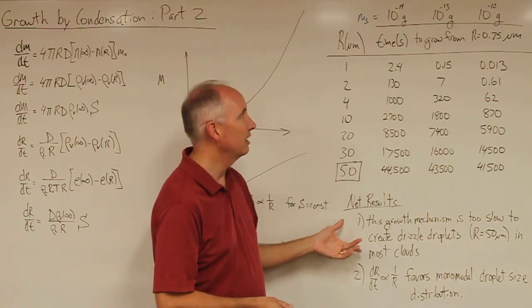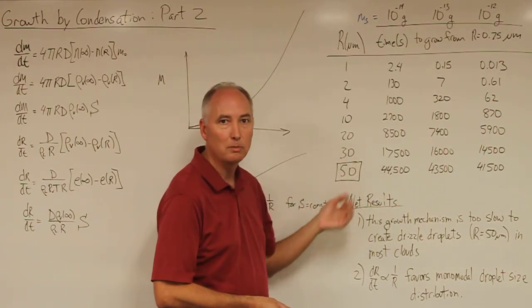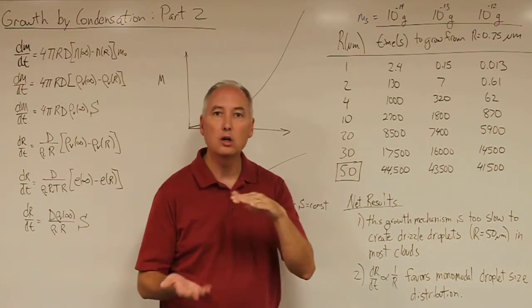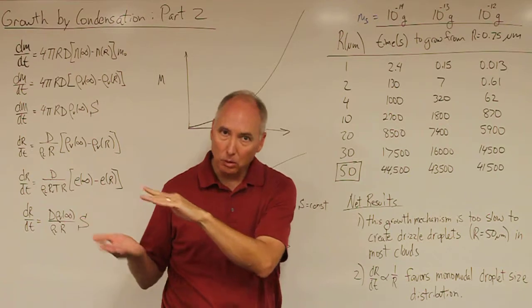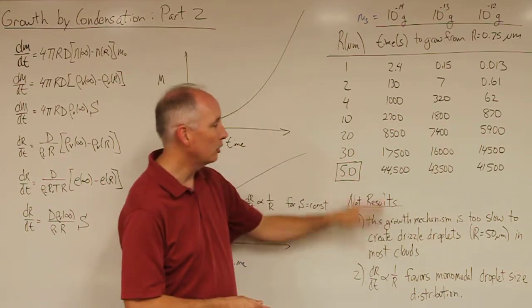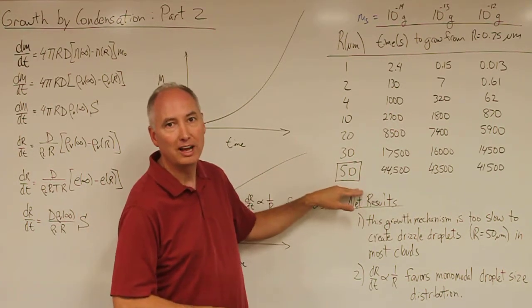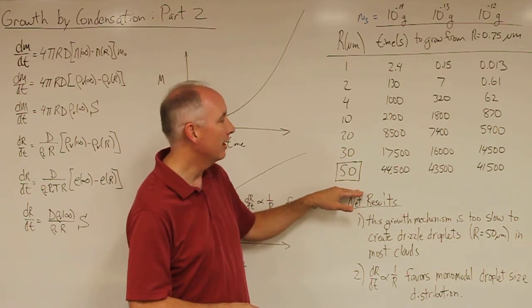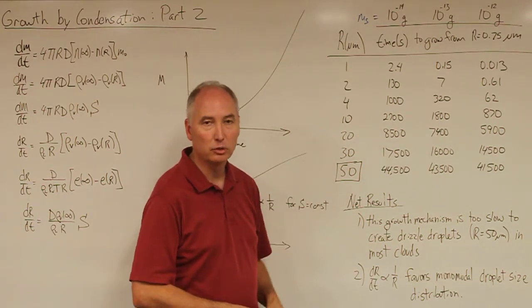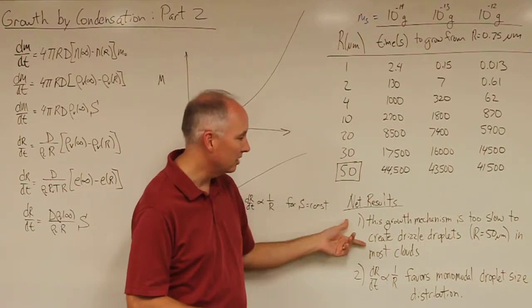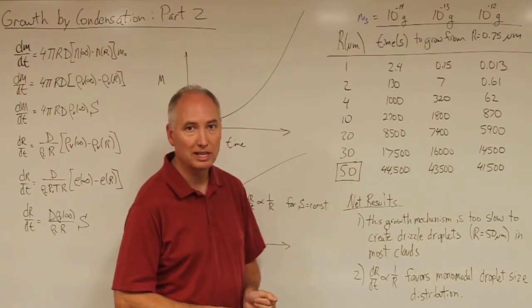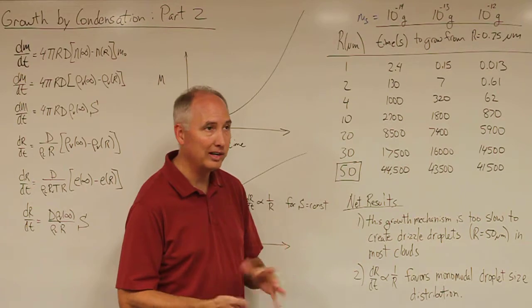About the only clouds that could, in fact, grow by this mechanism would be a long-lived stratus deck where the cloud persists for more than 12 hours. You might actually be able to get drizzle out of that cloud layer if it was just growing by condensation, but that cloud layer would have to persist for a very long period of time. And that's not the way clouds normally are in the atmosphere.